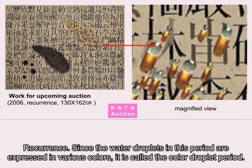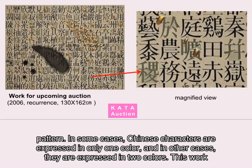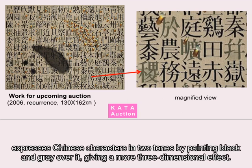Since the water droplets in this period are expressed in various colours, in this work a total of 176 Chinese characters — 11 columns vertically and 16 columns horizontally — are evenly arranged in a checkerboard pattern. In some cases, Chinese characters are expressed in only one colour, and in other cases in two colours. This work expresses Chinese characters in two tones by painting black and grey over it, giving a more three-dimensional effect.